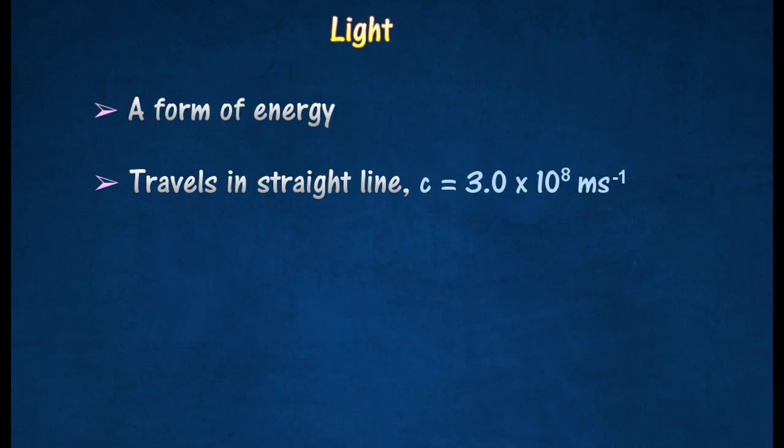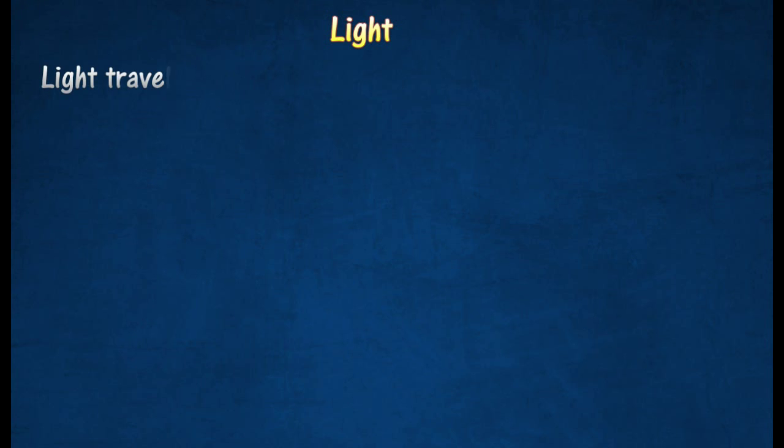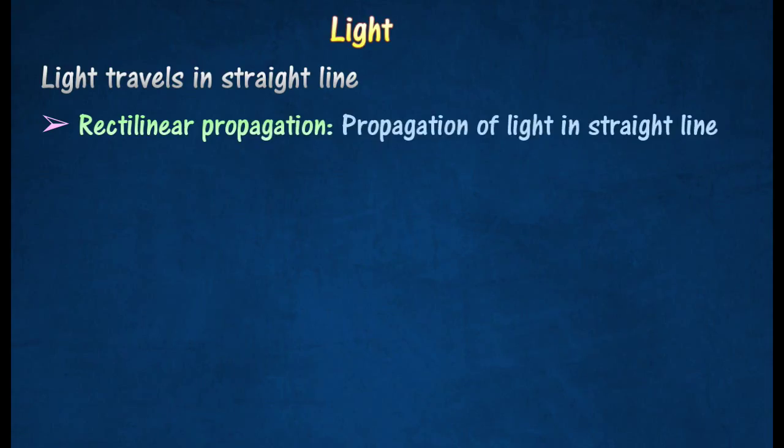It sometimes changes direction when it encounters a different substance. The flowing of light energy in a straight line is called the rectilinear propagation of light.